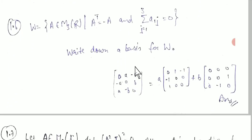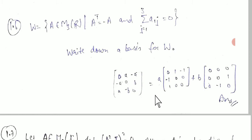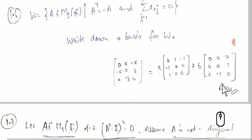This question is from linear algebra. We have A belonging to M3 with the skew-symmetric condition, meaning when we sum the relevant entries we get 0. For a skew-symmetric matrix, diagonal elements are 0 and off-diagonal elements satisfy aᵢⱼ = −aⱼᵢ. We choose elements a and b randomly, giving a and −a as the two free elements.